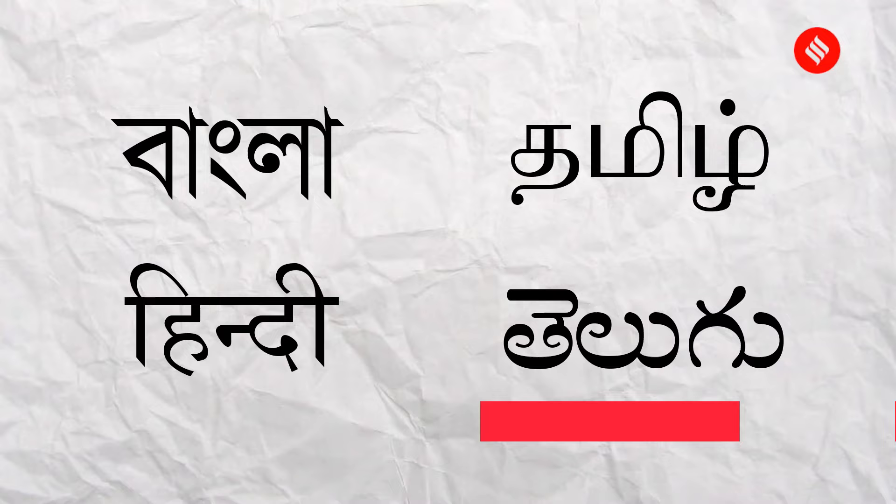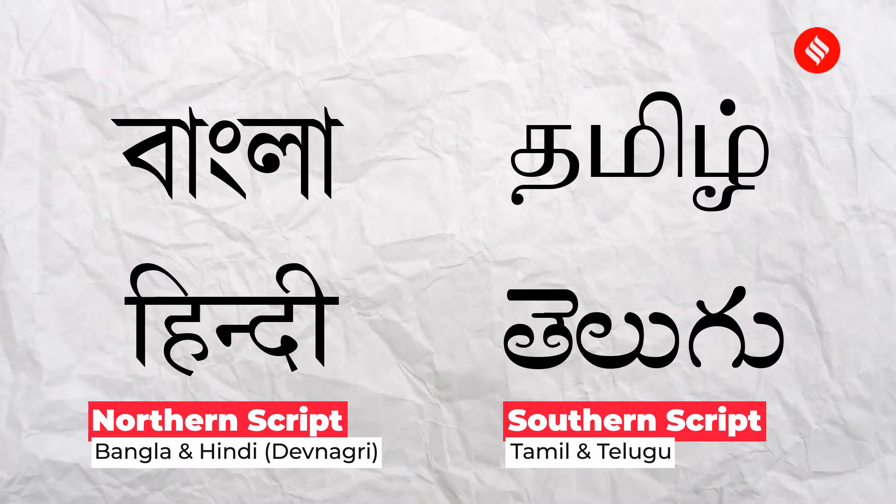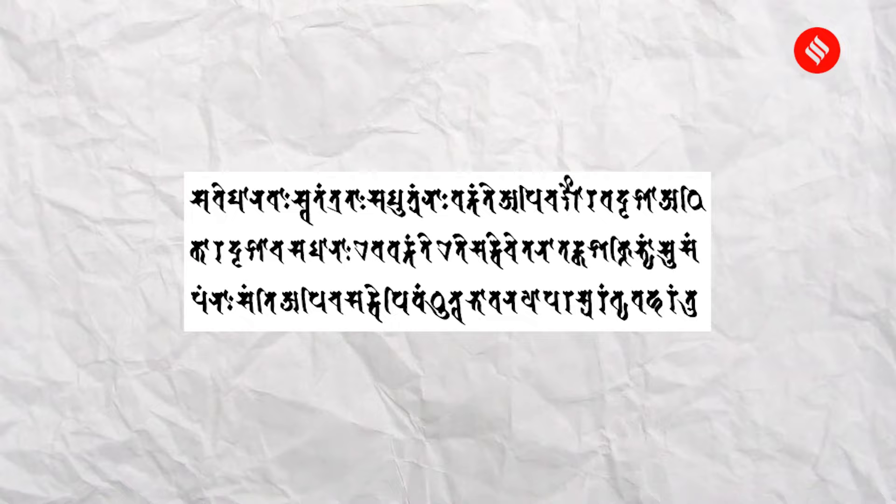So the script changes when it goes to the South. The North Indian scripts like Sharada, Devanagari, and Siddham are very sharp. But the South Indian scripts — Grantha, Kannada, Telugu, Malayalam, Tamil — are rounded because they were written on tadapatra, palm leaves. The material directly shaped the visual form of the script.